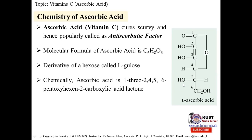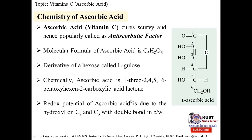The structure has five hydroxyl groups: positions one through six — one, two, three, four, five, and six. The redox potential of ascorbic acid is due to the hydroxyl groups at carbon number two and carbon number three, with a double bond between these two carbons. This part — the OH groups at C2 and C3 with the double bond — is responsible for the main redox function.